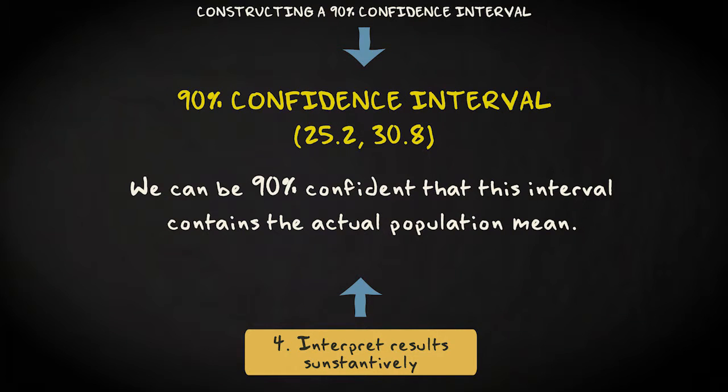More precisely, if we would draw an infinite number of samples with n equals 150 from our population, and for every sample we would compute the confidence interval with this margin of error, in 90% of the cases the population value would fall within the confidence interval.